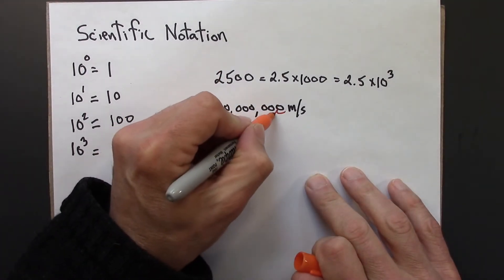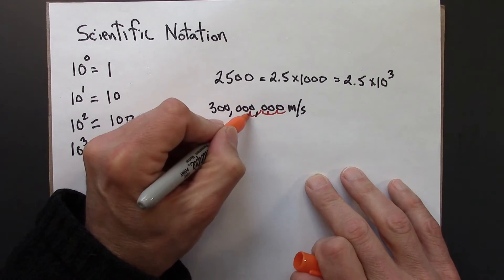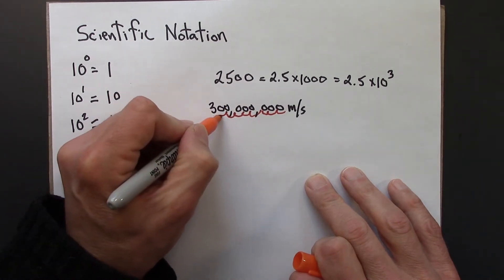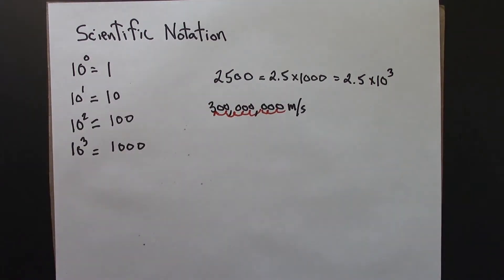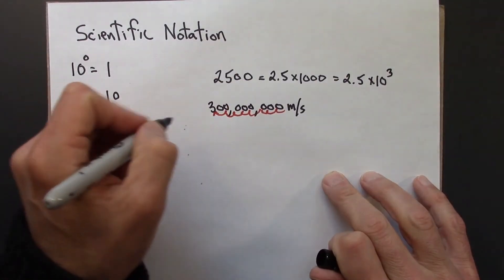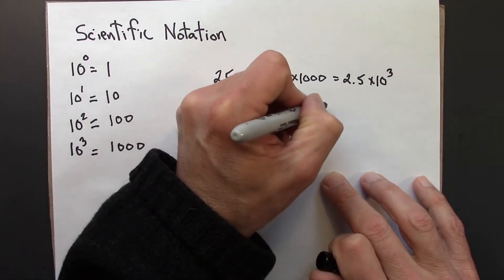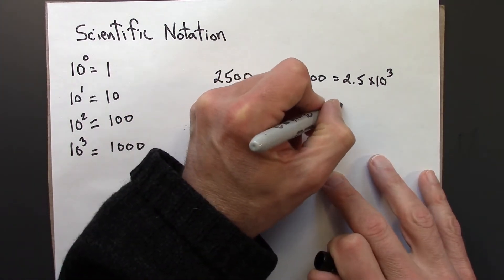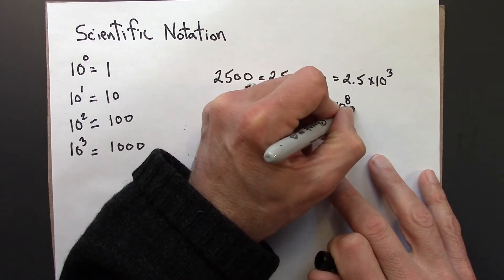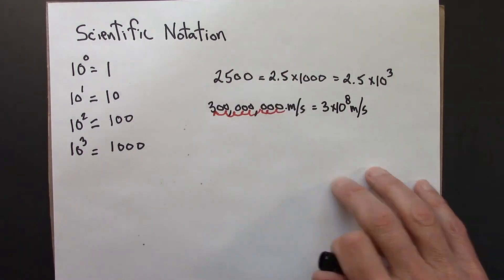How many zeros do we have? 1, 2, 3, 4, 5, 6, 7, 8. So 8 zeros. I have to move over. It's a decimal point there. I'll move up to the left 8. So this is 3 times 10 to the 8 meters per second.